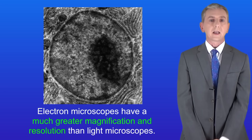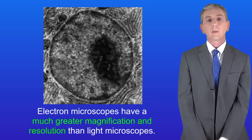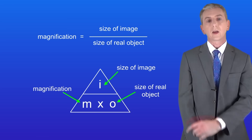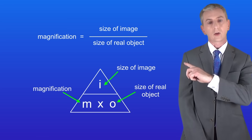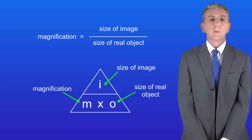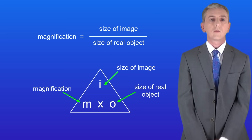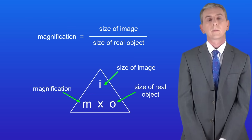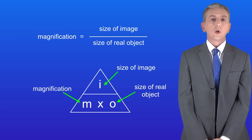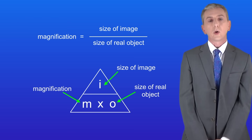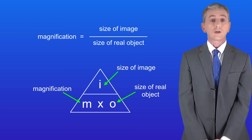We can calculate the magnification of a microscope using this equation: the magnification equals the size of the image divided by the size of the real object. You will be given this equation in the exam but you won't be given the triangle, so it's worth learning.